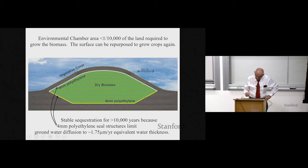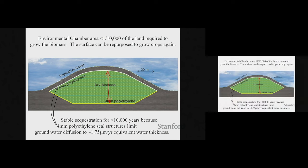What about putting the biomass underground in an environmental chamber? It doesn't have to be very big — you can build it up to 30 meters tall, covered over. The land area is one ten-thousandth of the land area needed for the agriculture. It's stable, and I'll show you the proof. One reason it's stable is that water does not easily get through polyethylene. The amount of water that gets through is equivalent to 1.7 microns of liquid water per year. The dry biomass can easily absorb that and still stay below 60% water activity — it lasts for thousands of years.